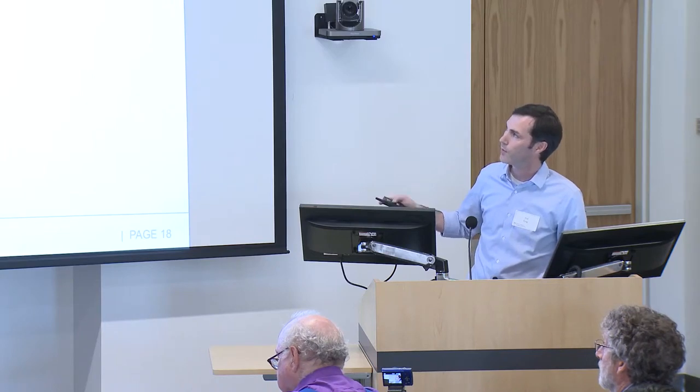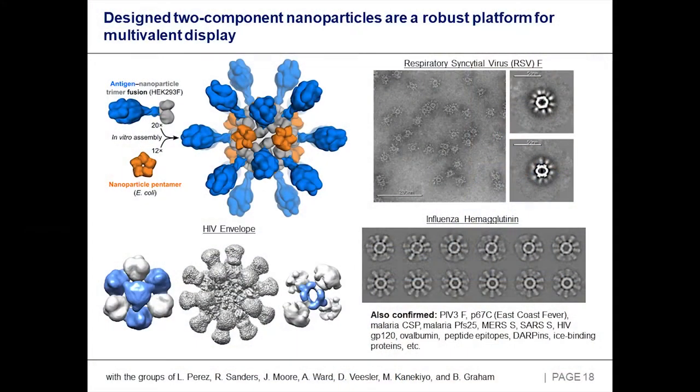We produce the antigen-fusion component in whatever expression host is appropriate — for glycoprotein antigens, that's secreted from mammalian cells. The other component we produce in the most convenient host; E. coli is cheap and robust, so that's often what we use. You purify them, mix them, and get the 120-subunit particles. This is a particle displaying 20 copies of the prefusion-stabilized RSV F protein DS-CAV1 from the VRC. These are single-particle reconstructions of particles displaying many different antigens: DS-CAV1, full-length influenza hemagglutinin, stabilized stems, monomeric receptor-binding domains, and HIV envelope trimers — which are my least favorite protein in the entire world.